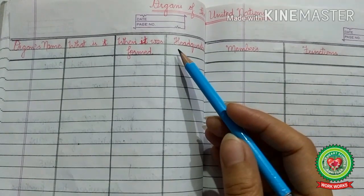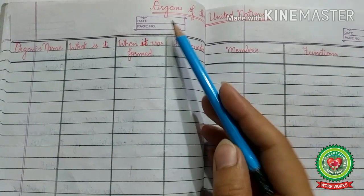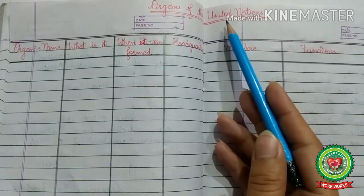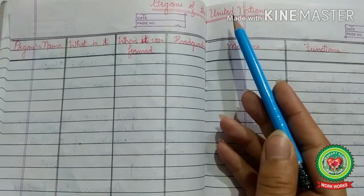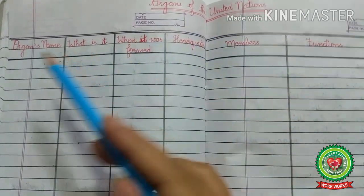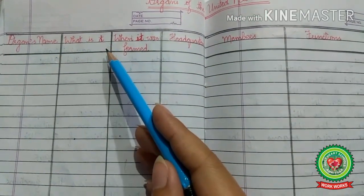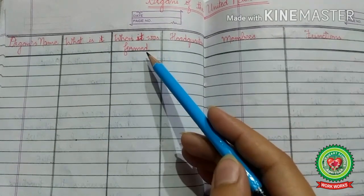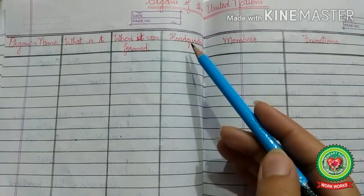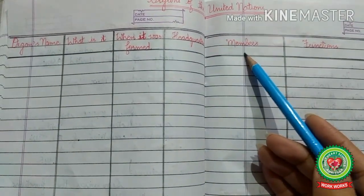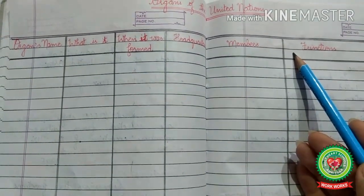Your today's homework is to complete the chart of organs of the United Nations, in which you have to mention the organ's name, what it is, when it was formed, headquarters, members, and its functions.